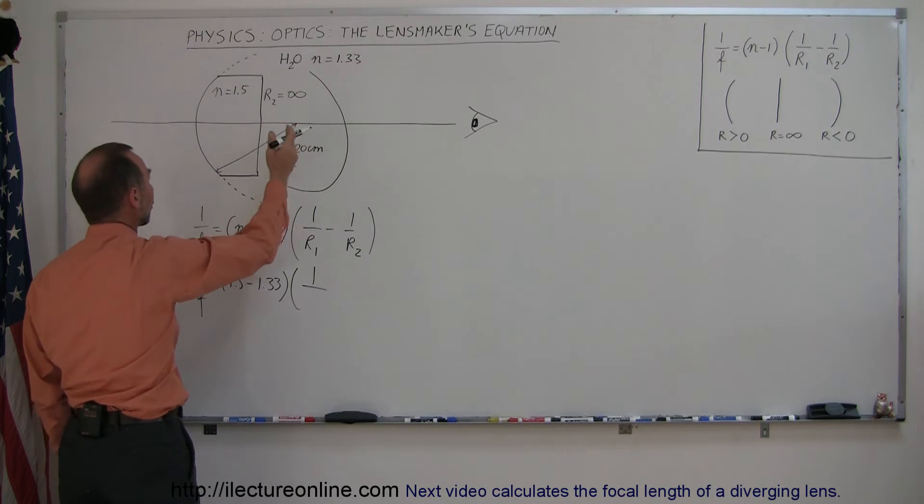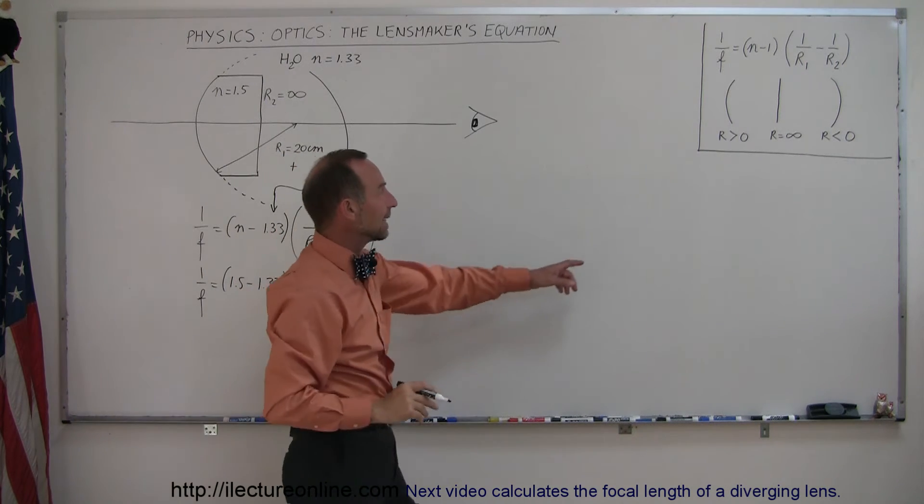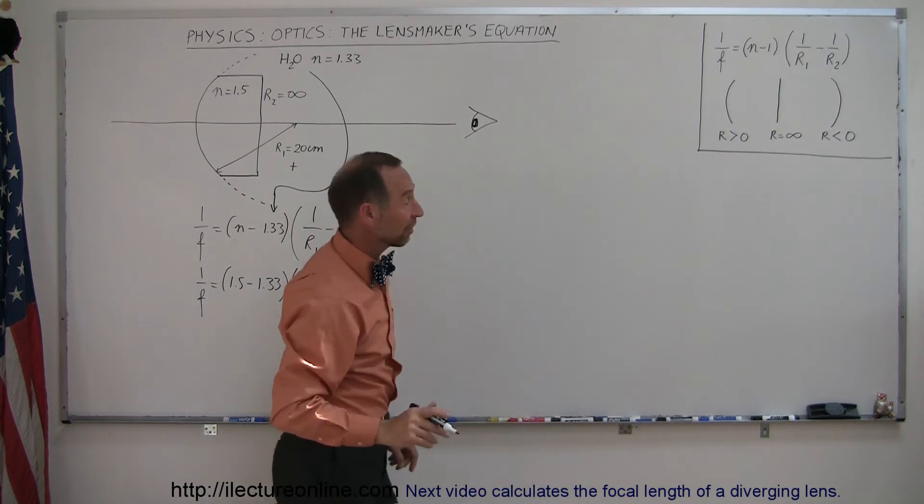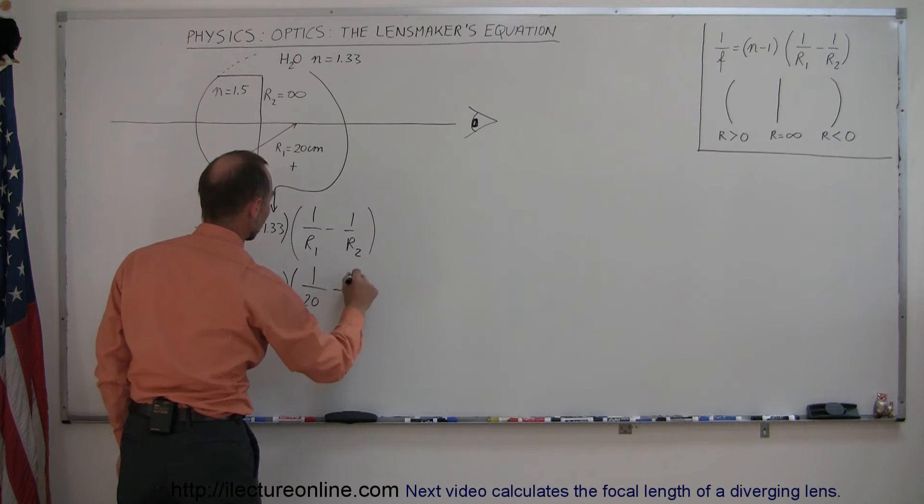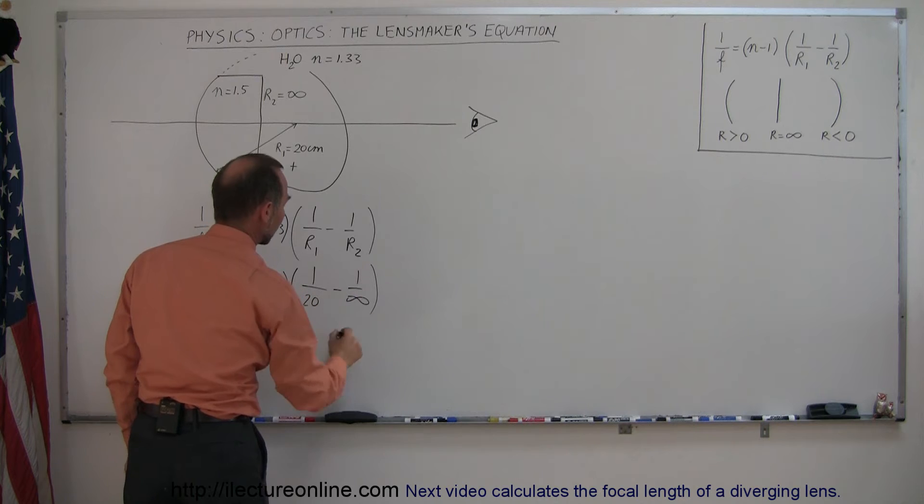since r1 is bulging away from the observer to the left, the radius of curvature is a positive number greater than zero. So it's 1 over 20 centimeters minus 1 over infinity.